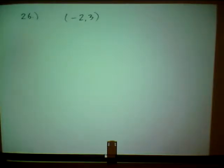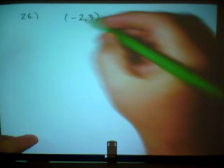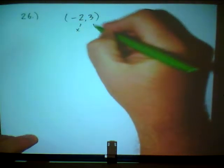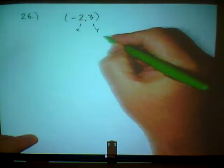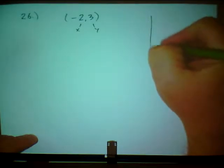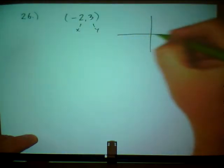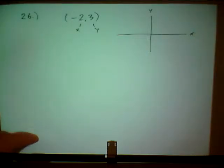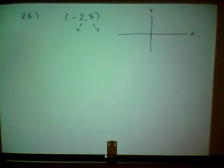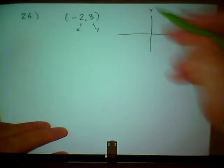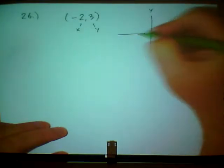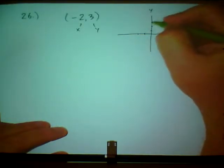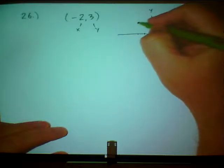So basically they're giving us a point, an x and a y. We need to think about our x, y coordinate system and plot this point. So negative 2, 3 would be right here. That's my point.